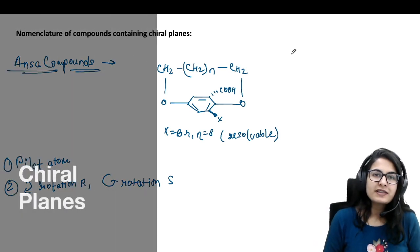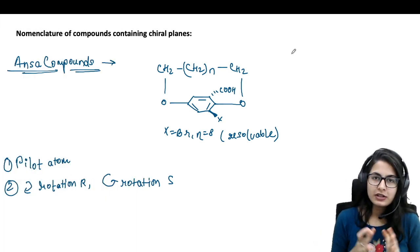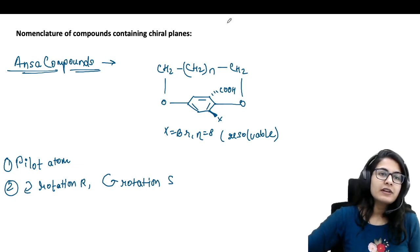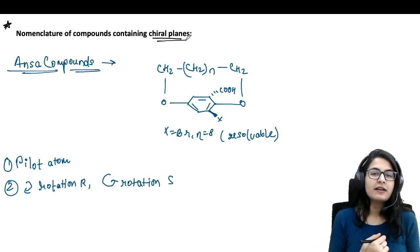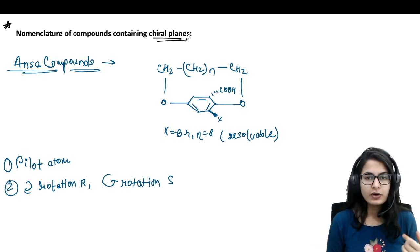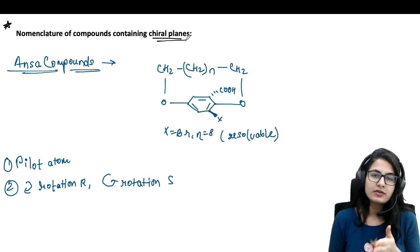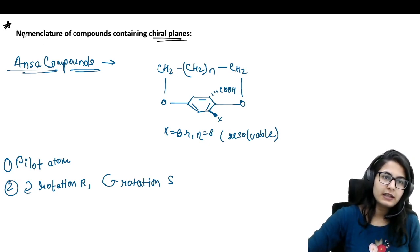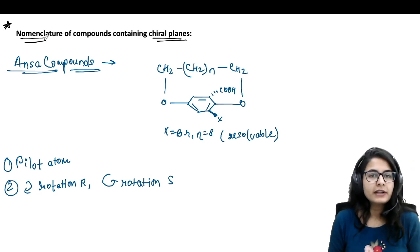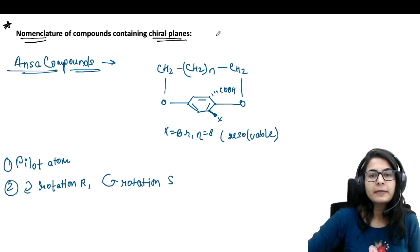Hello everyone, welcome to Rasayan Academy. So another video in the short trick series — today we are going to understand the nomenclature of compounds containing chiral planes. Before this we have already done a video on RS nomenclature, second on RS nomenclature of compounds having a chiral axis, and here we are doing the nomenclature of compounds containing chiral planes.